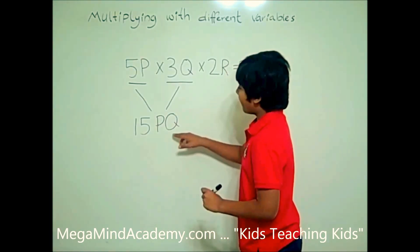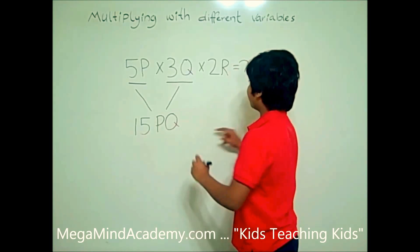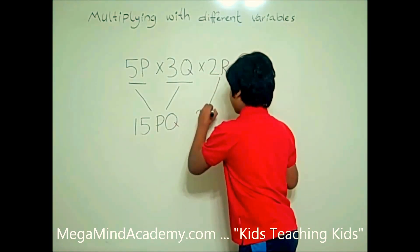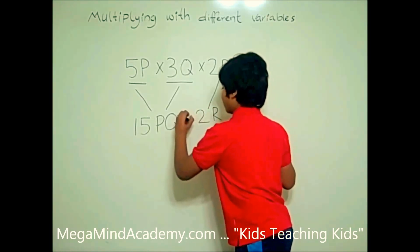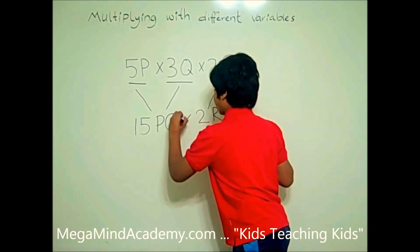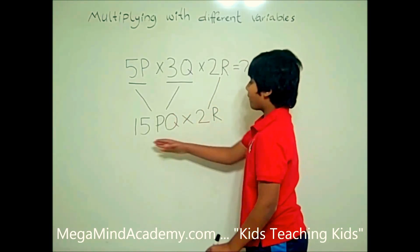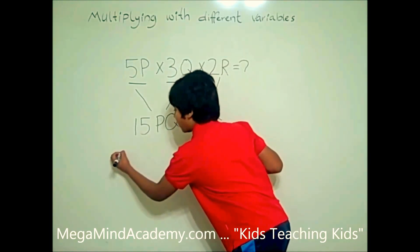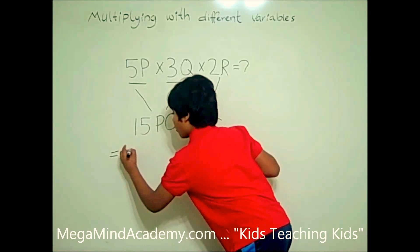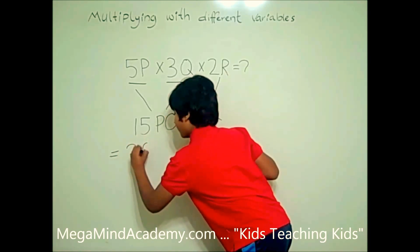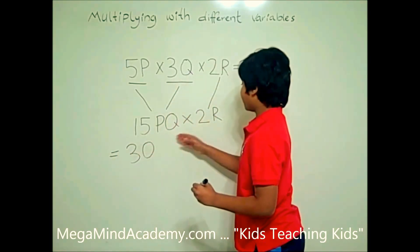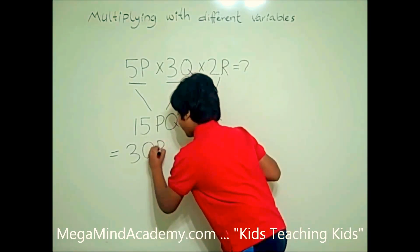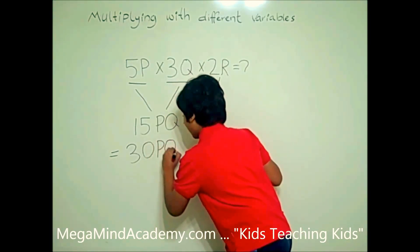Now we're going to multiply 15pq by 2r. 15 times 2 is equal to 30. pq times r is equal to pqr.